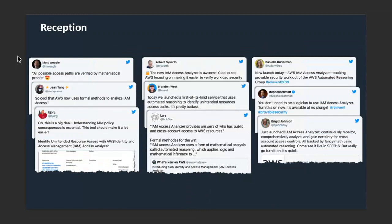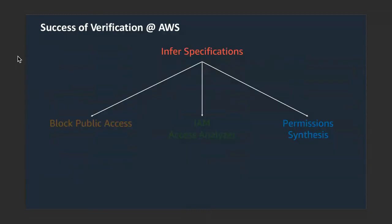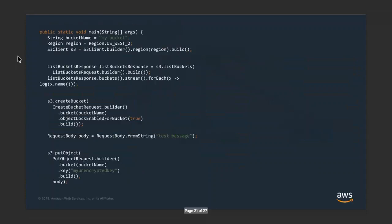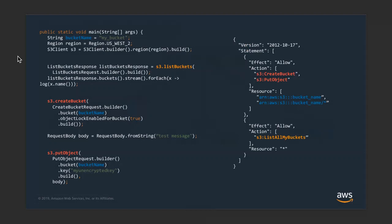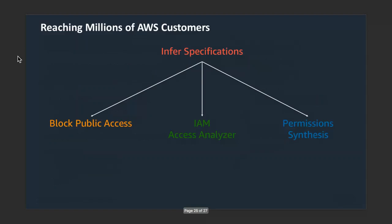Before I wrap up, I want to mention something we're working on right now: how do we synthesize permissions from the get-go? Here's an example application that operates on an S3 bucket, making a few API calls. We do a data flow analysis to automatically extract the permissions needed by this application, so you can get the right permissions to begin with.